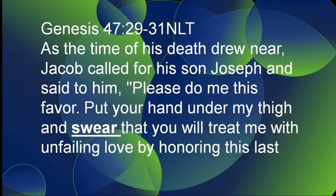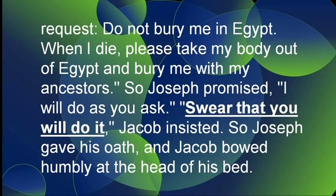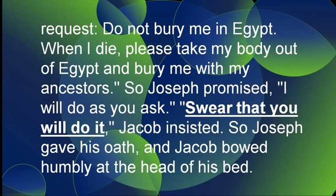As the time of his death drew near, Jacob called for his son Joseph and said, 'Please do me this favor. Put your hand under my thigh and swear that you will treat me with unfailing love by honoring this last request. Do not bury me in Egypt. When I die, take my body out of Egypt and bury me with my ancestors.' So Joseph promised — he didn't swear, he promised. 'I will do as you ask.' 'Swear that you will do it,' Jacob insisted. 'I want this to be an oath, a vow.' So Joseph gave his oath, and Jacob bowed humbly at the head of his bed.